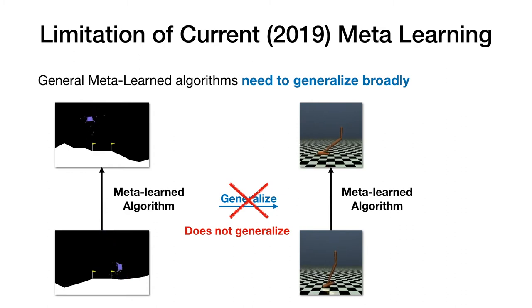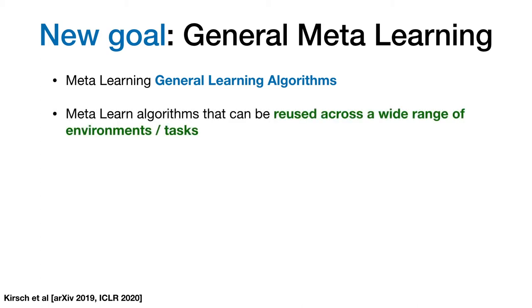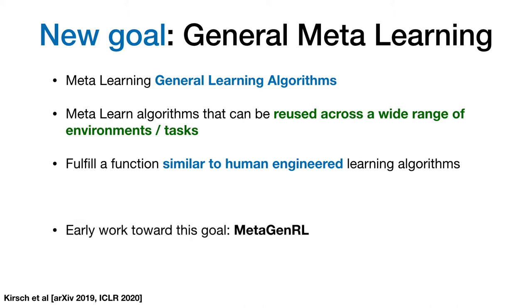And this does not fit at all with the goal of replacing human engineered learning algorithms. Imagine I would invent a new learning algorithm that only works on lunar lander. No conference would accept my paper. So what I'm interested in is general meta-learning. General meta-learning is about meta-learning general learning algorithms. The meta-learned algorithms have to be reusable across a wide range of environments and tasks. So basically, they fulfill a similar function to human engineered algorithms. And my first work on this was meta-general, which appeared at the end of 2019. Meta-general stands for meta-learning general reinforcement learners.